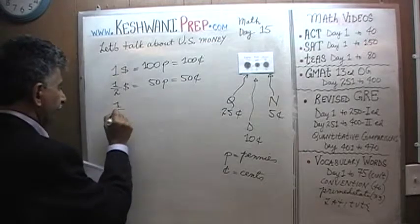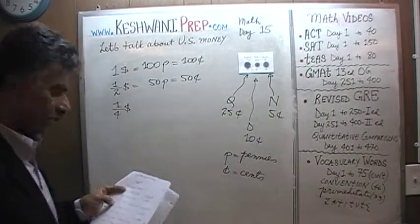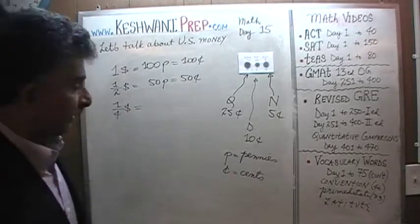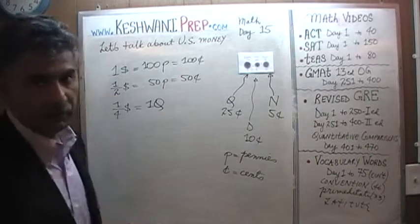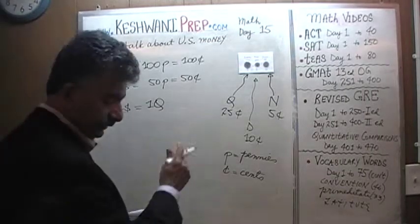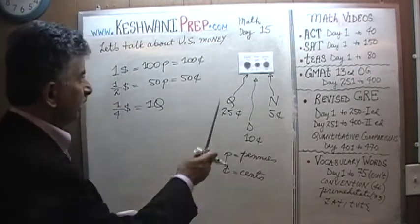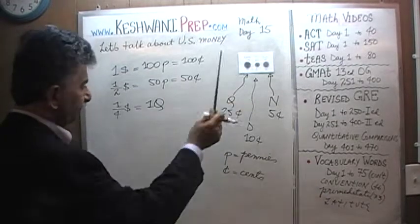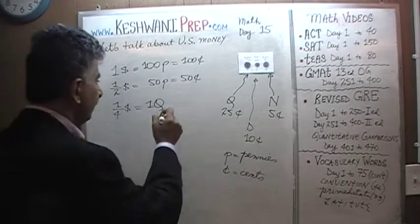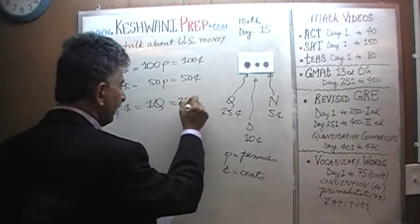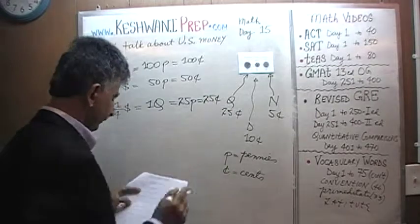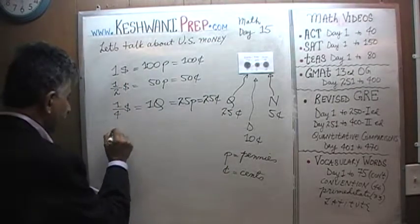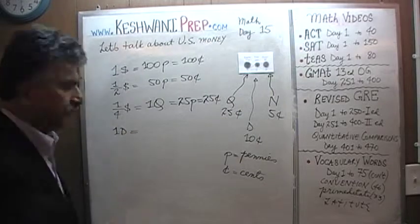One quarter of a dollar is exactly what it is — it is called one quarter. Right here are samples of one: that's a quarter. The quarter is 25 cents, or 25 pennies.